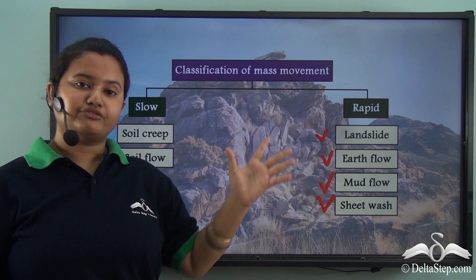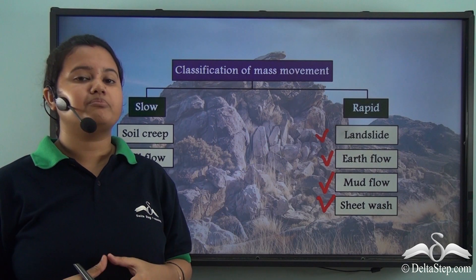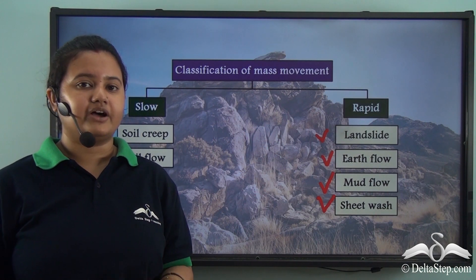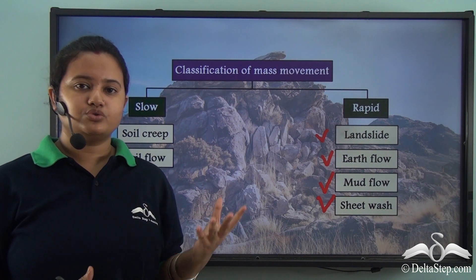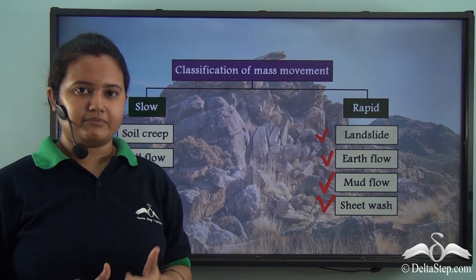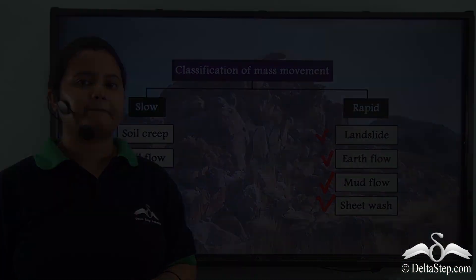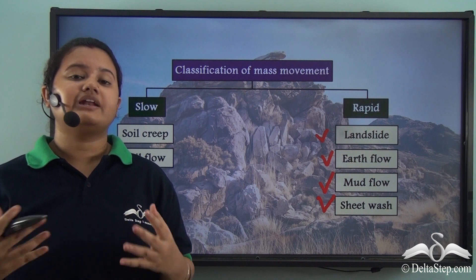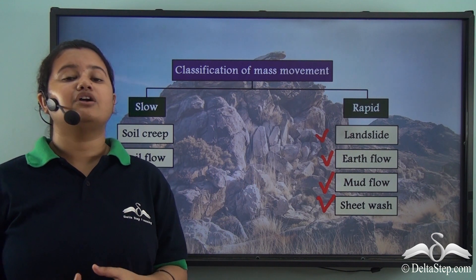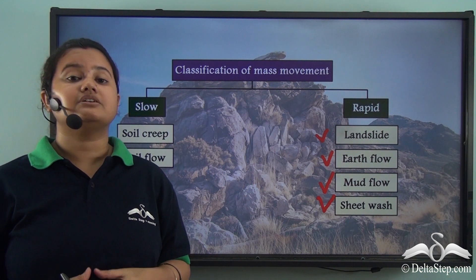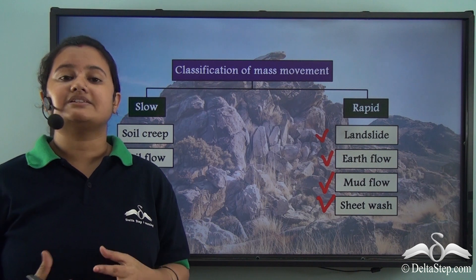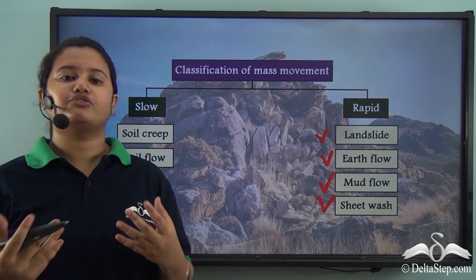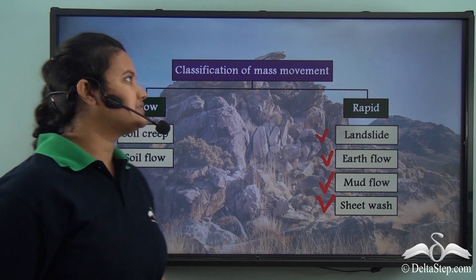Mass movement can be classified into two types: slow and rapid mass movement. During these mass movements, different landforms are formed on the earth's surface. Let us now discuss the landforms that are formed by mass movement.